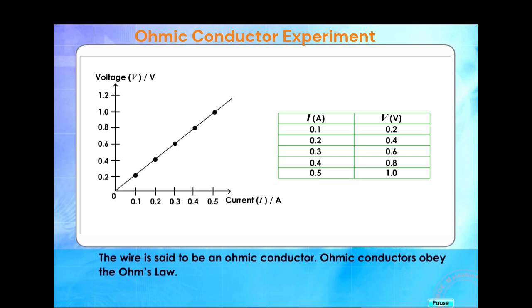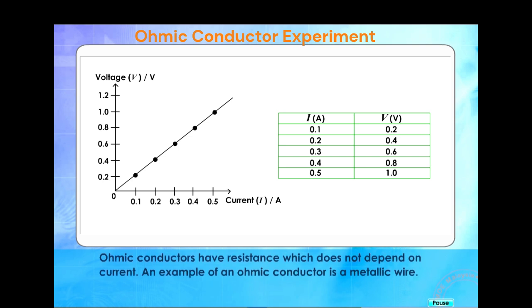The wire is said to be an Ohmic conductor. Ohmic conductors obey Ohm's law. Ohmic conductors have resistance which does not depend on current. An example of an Ohmic conductor is a metallic wire.